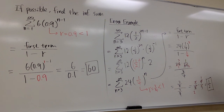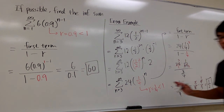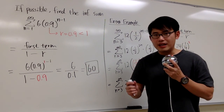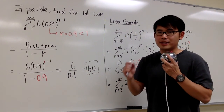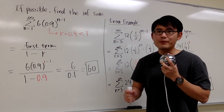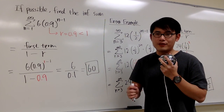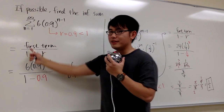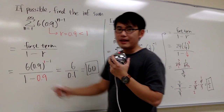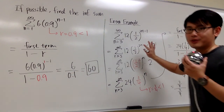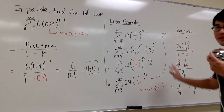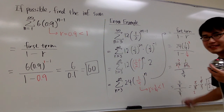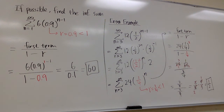The key idea here is that you have to be careful about picking out the correct common ratio and the correct first term in order to use this formula. This second example is a really good illustration of that. That's it — thank you.